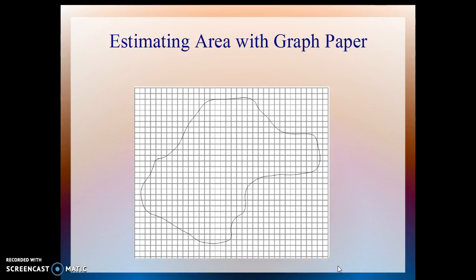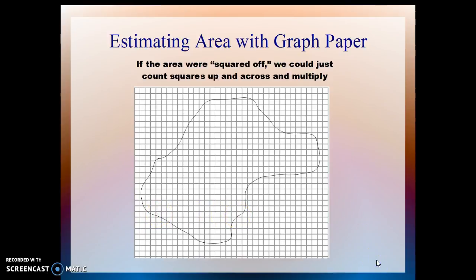How about the area? Well, if you have a piece of graph paper, you can superimpose the object on the graph paper, and then each of these squares represents a little tiny area that is a part of the big area. If the area were perfectly squared up — actually a rectangle or a square — you could just count the number of squares up, count the number of squares across, multiply, and get the answer quickly.